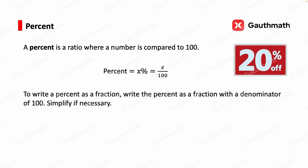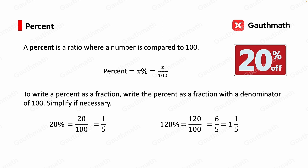To write a percent as a fraction, write it with a denominator of 100 and then simplify if necessary. For example, 20% can be written as 20 over 100, which reduces to 1 fifth. Another example: 120% can be written as 120 over 100, simplified to 6 over 5, and further to 1 and 1 fifth.